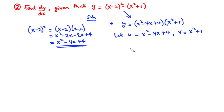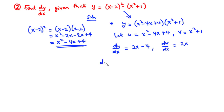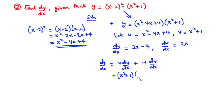Finding du/dx: differentiate x² to get 2x, differentiate -4x to get -4, and the constant 4 gives 0. So du/dx equals 2x - 4. For dv/dx: differentiating x² gives 2x, and the constant 1 gives 0. So dv/dx equals 2x. From the product rule: dy/dx equals v times du/dx plus u times dv/dx, which gives (x² + 1)(2x - 4) plus (x² - 4x + 4)(2x).